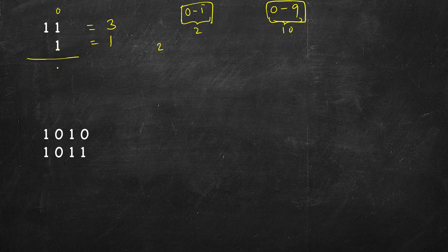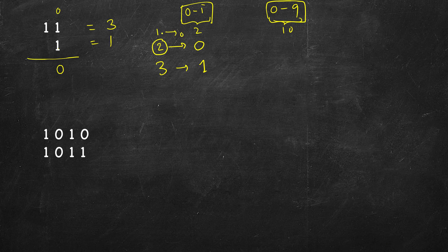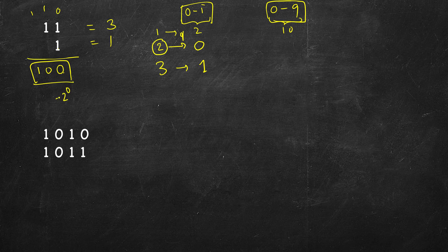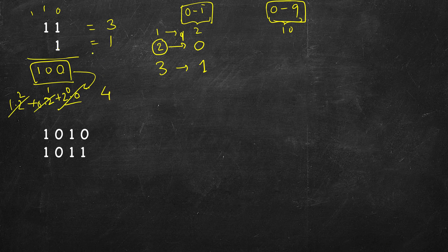So 1 plus 1 gives result 0 with carry 1. If the sum is 3 the result digit will be 1. The sum cannot exceed 3 in any case. Adding the next digits: 1 plus 1 gives 0 and carry 1, and the final carry of 1 is written at the front. Converting this binary result: we get 0 plus 0 plus 4, which equals 4. And adding 3 plus 1 in decimal also gives 4, confirming the result.